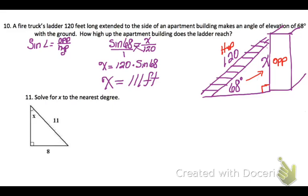On number 11, solve for X to the nearest degree. Now notice on this one, they're not asking me to find a side length. They're asking me to find an angle. So degrees. So I'm going to use an inverse of one of my trig functions. Well, from the angle that I have circled, I know that 8 is my opposite and 11 is my hypotenuse. So remember that sine uses opposite over hypotenuse. So I'm going to say the sine of angle X equals 8 over 11.